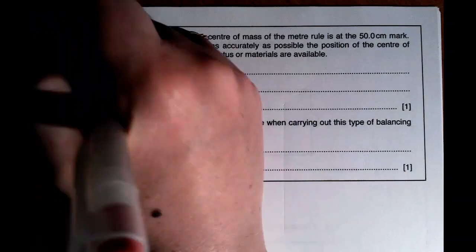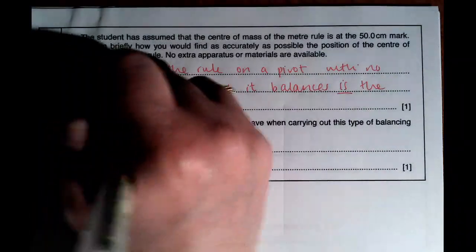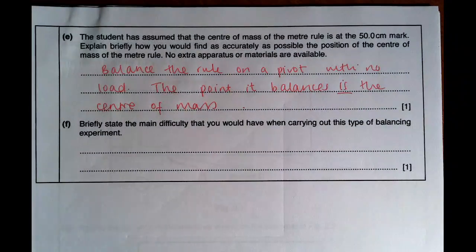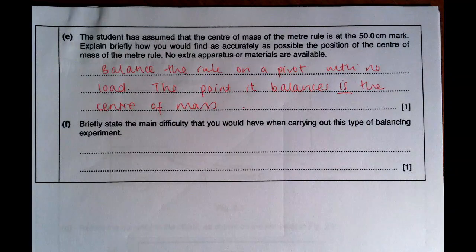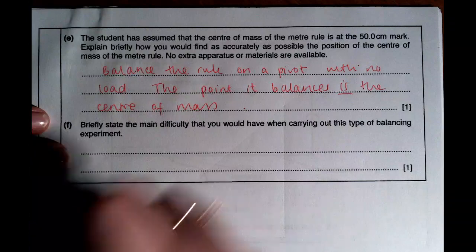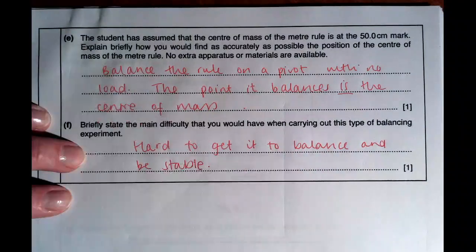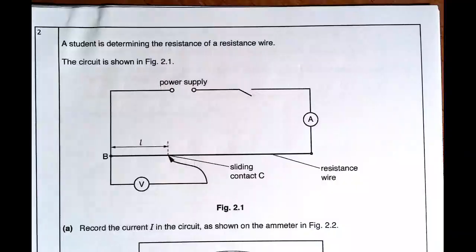In part E, the student has assumed the centre of the mass is at the 50 centimetre mark. Explain how you would find as accurately as possible the position of the centre of the mass of the metre ruler. I would need to balance the rule on a pivot with no load. The point it balances is the centre of mass. It's the point of taking the load off and then looking for that balance point because that's where the weight acts through. Then lastly, say the main difficulty you would have. It's very difficult to get a stable balance. Stability is the key there.